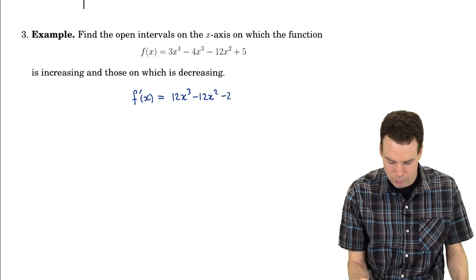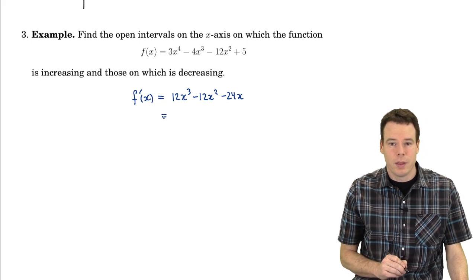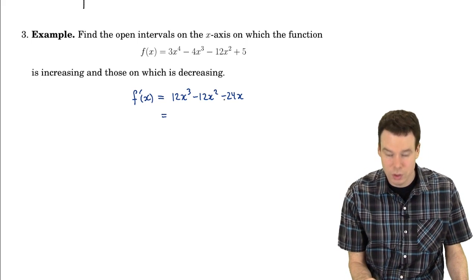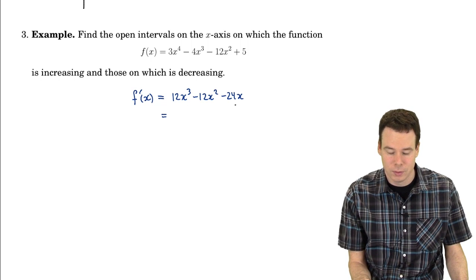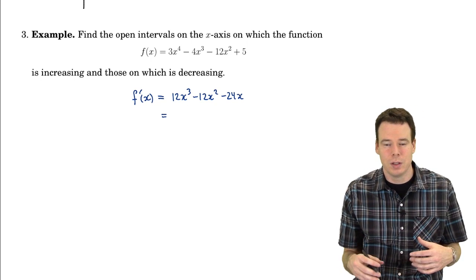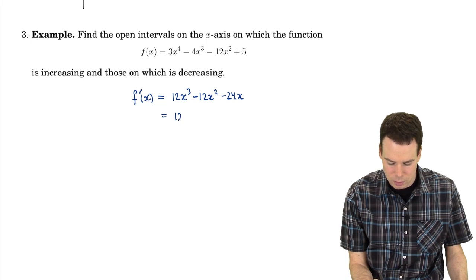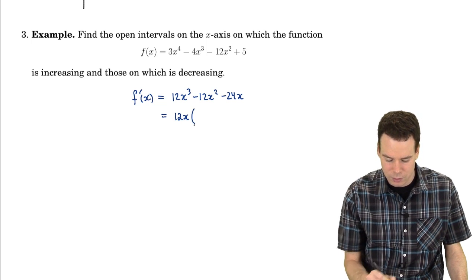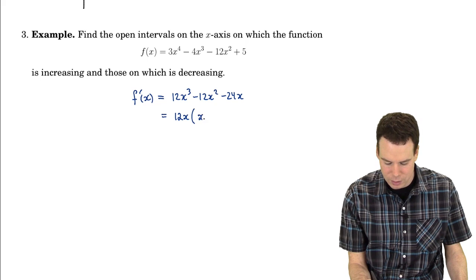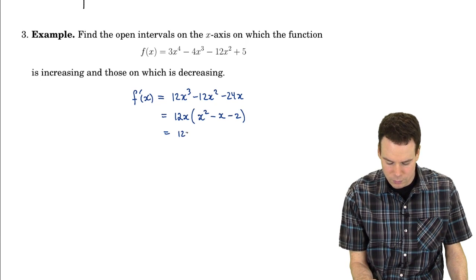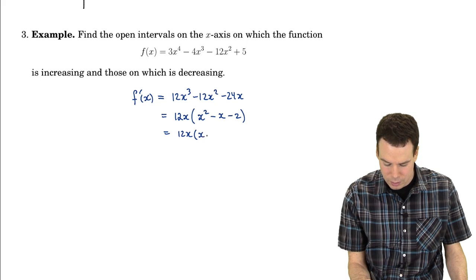The derivative is 12x³ minus 24x. We need to figure out where that's positive and where that's negative. It helps to know where it's zero, so we can look on the intervals between the zeros to figure out where it's positive and negative. So we'll factor: I can factor out 12x from everything, leaving x² minus x minus 2. That quadratic factors as (x minus 2)(x plus 1), so the derivative is 12x(x minus 2)(x plus 1).